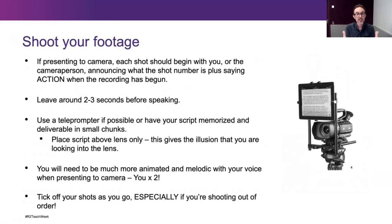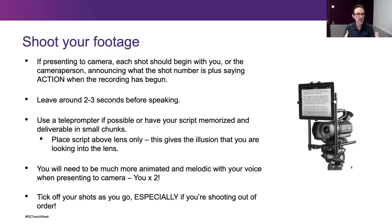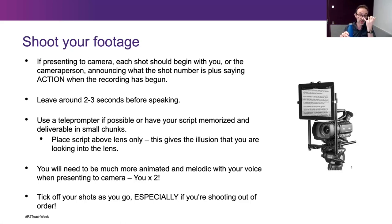If you have someone presenting to camera, it's always good to keep track of the shot you're taking and indicate in the footage that a shot's about to start. When you've got your storyboard with all those shot numbers, you press record, say 'this is shot three, action,' and then the person should wait around two to three seconds before speaking. The reason is to give a little room to cut around — you don't want a person to start speaking straight away after 'action.' That few seconds before they start speaking gives you room to work with in editing.